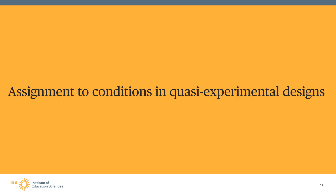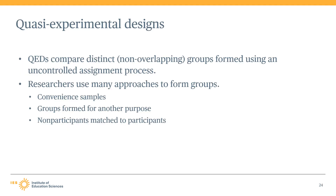Now that we have described the considerations needed when assessing assignment to conditions in randomized designs, we will turn to the considerations needed when assessing assignment to conditions in quasi-experimental designs. Recall that QEDs assign units to conditions using an uncontrolled assignment process, and the groups in QEDs must be distinct, meaning the groups are composed of non-overlapping units.